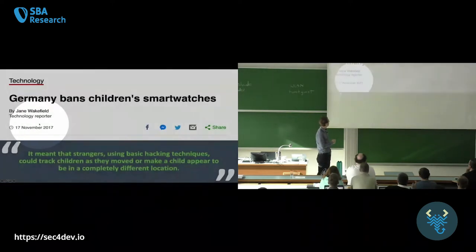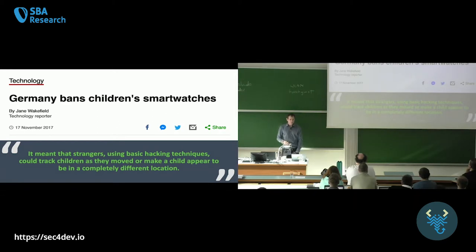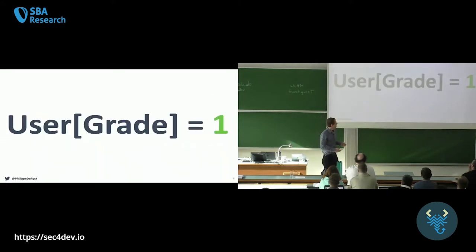This is from 2017. Interestingly enough, at the end of last year, a group of researchers decided to look at Gator again. Maybe they learned their lesson, maybe they built a better API ecosystem. And they looked at the APIs, and they found something very interesting. There was a parameter called user grade equals one. The guy said like, what if I change the one to zero? Boom, admin access to the API. This is not a joke. Directly admin access to the full API. That's where we set the bar. We have our baseline.